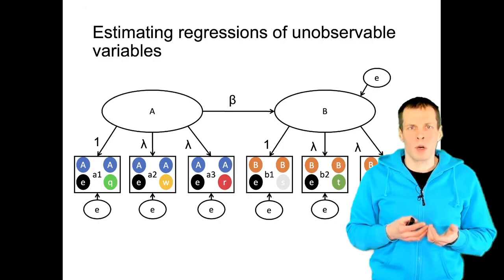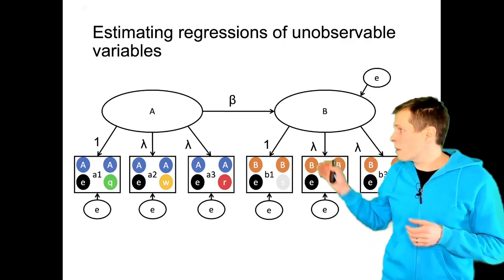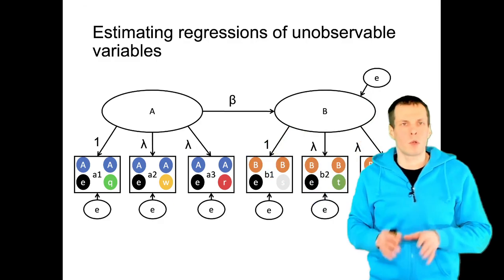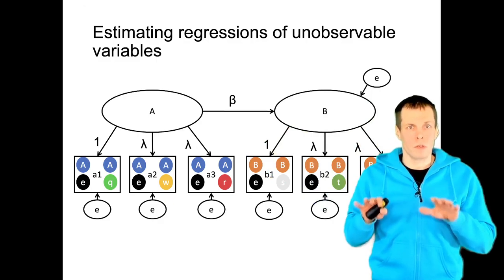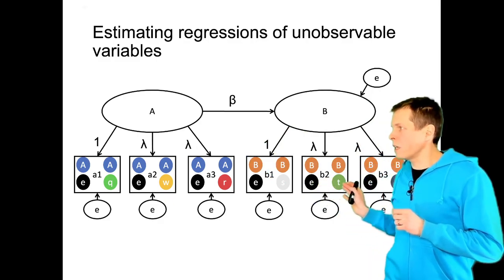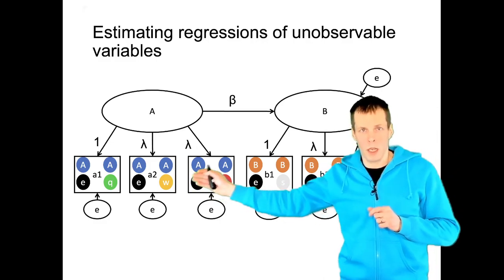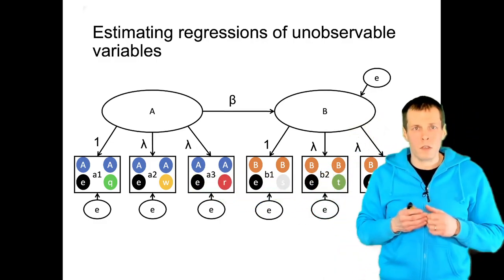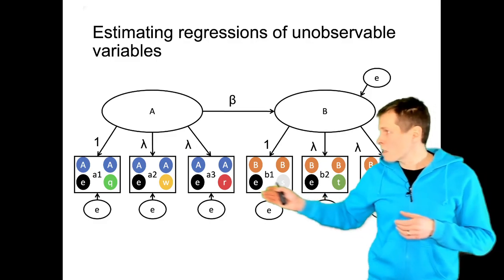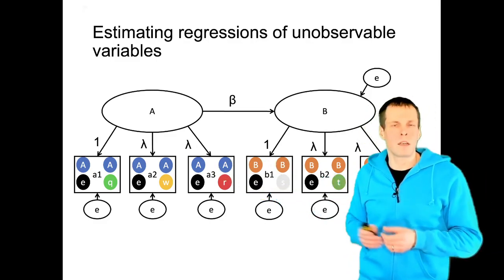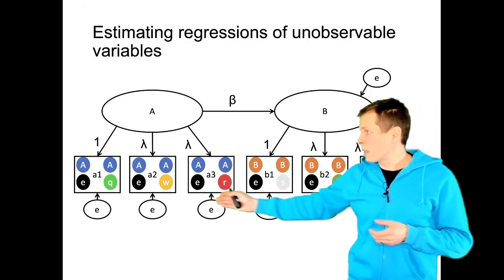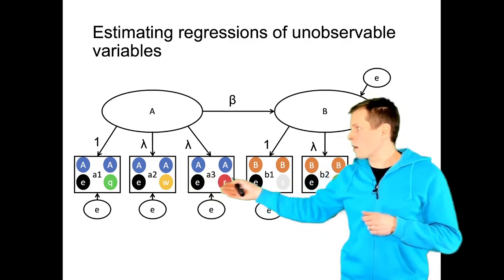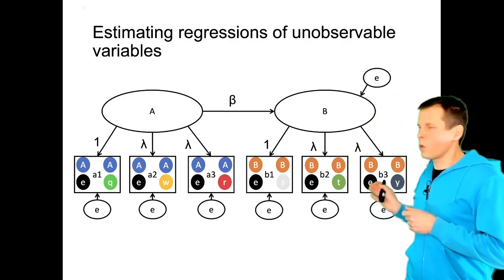When we have a latent variable model, the problem is that we're interested in the latent variables A and B, but we don't observe those variables directly. Rather, we observe indicators: A1, A2, and A3; B1, B2, and B3. These indicators contain variance from the latent variable, but they also contain error — the e's, the unreliability — and specific variance Q, W, R, S, T, and Y.